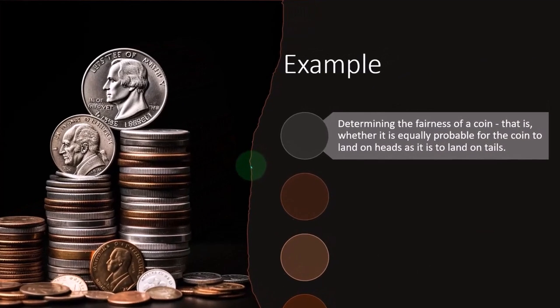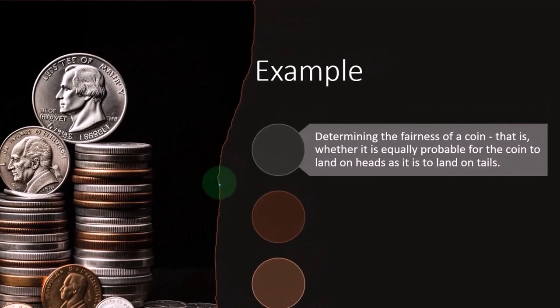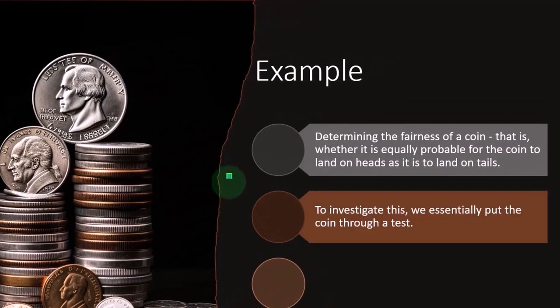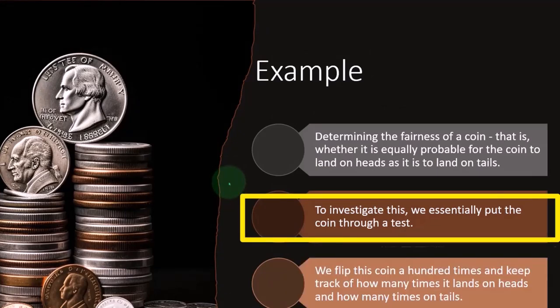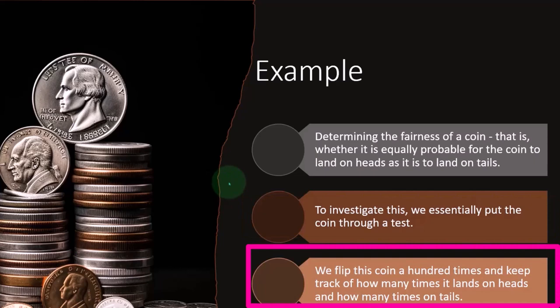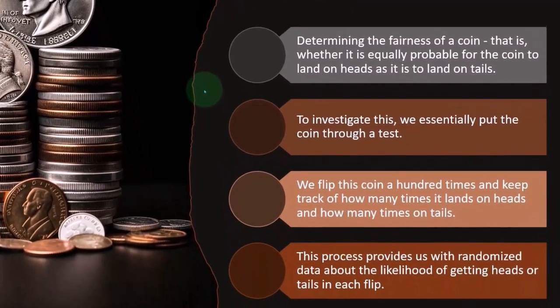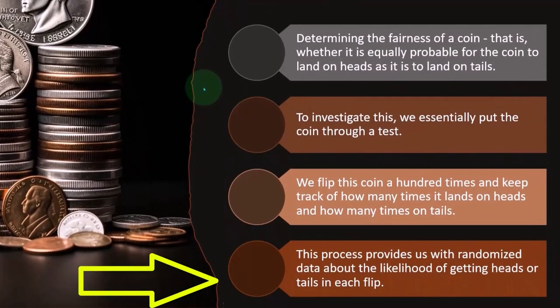It's not enough to be even. It's not enough to say, well, you know, it could go either way. No, you have to prove it. Okay, we know that. So to investigate this, we essentially put the coin through a test. So we flip this 100 times and keep track of how many times it lands on heads and how many times it lands on tails. This process provides us with the randomized data about the likelihood of getting heads or tails in each flip.